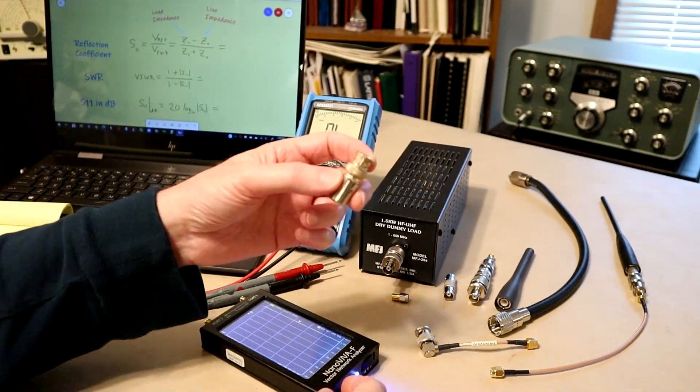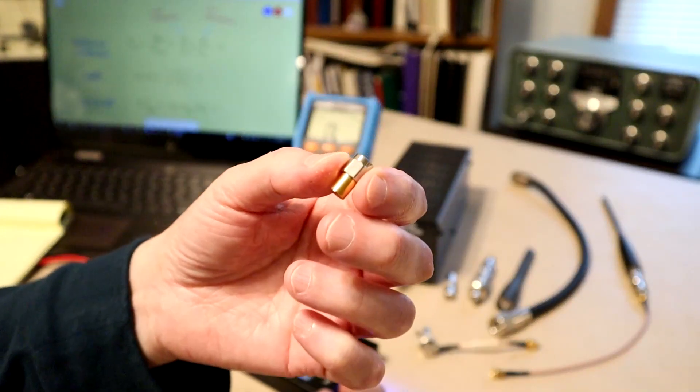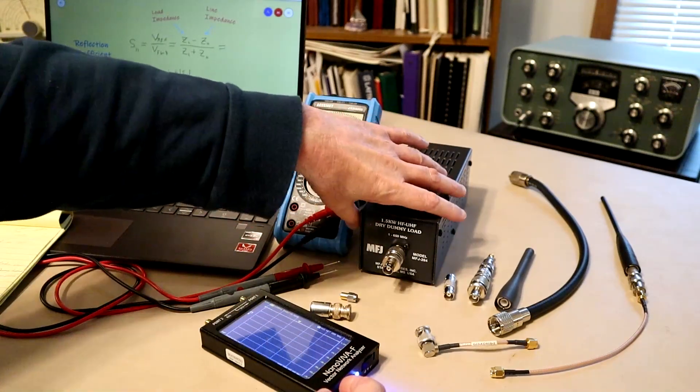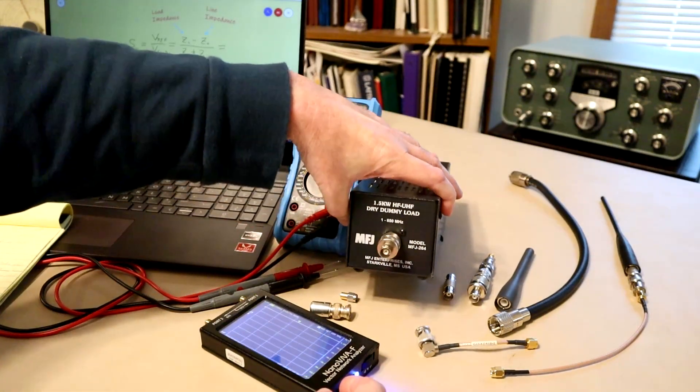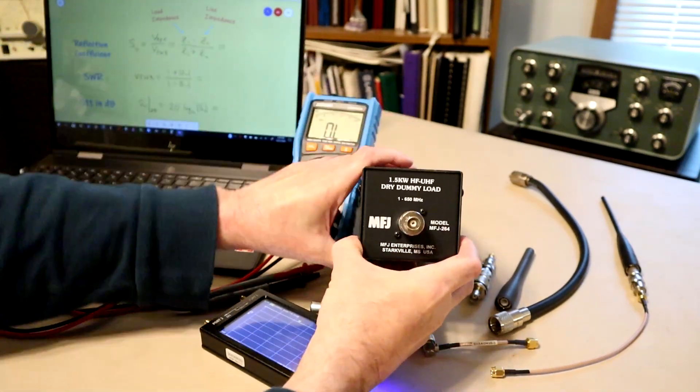This is a BNC load, it's a 50 ohm resistance. This is the one that comes with the nano VNA, it's an SMA type. But sometimes we use loads to substitute for antennas when we're testing radio transmitter equipment, and this specific one is marketed by MFJ.